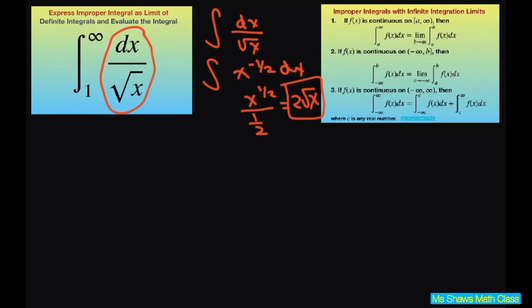Now let's get back to our problem. We're going to express it as an improper integral, as a limit. So here we're using part 1. Our a is 1 and we're going to infinity. So this is the form we have. We're going to write it as the limit as b approaches infinity from a, our a is 1, to b of f of x.